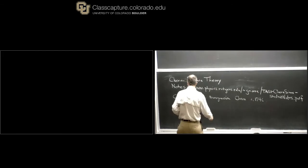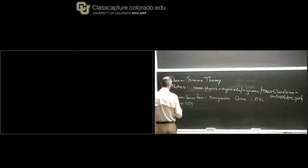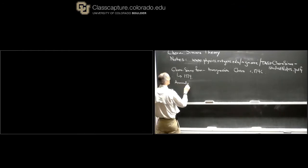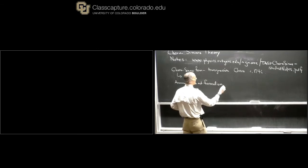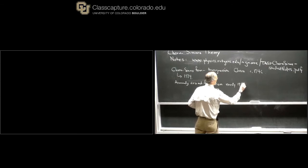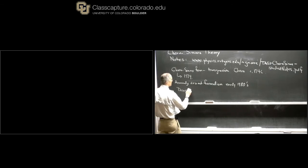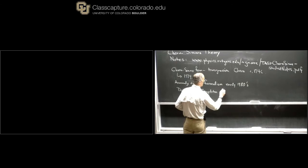Chern and Simons took that up again around 1974 to discuss some mathematical questions of immersions of three-dimensional spaces into other spaces. Then it started to enter the consciousness of physicists in the late 70s and early 80s — there's something called the anomaly descent formalism, and Chern-Simons forms play an important role there. As far as I know, the first people to consider using a Chern-Simons term as a term in an action is work of Deser, Jackiw, and Templeton in 1982.